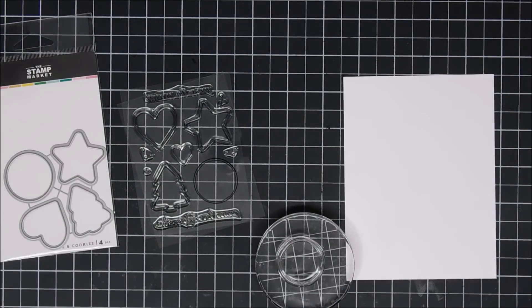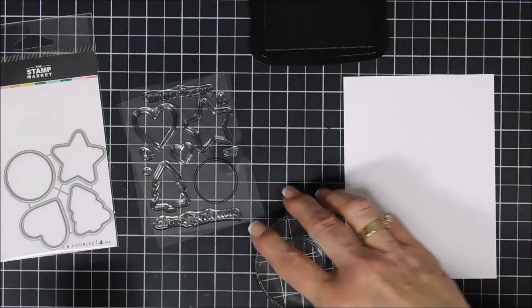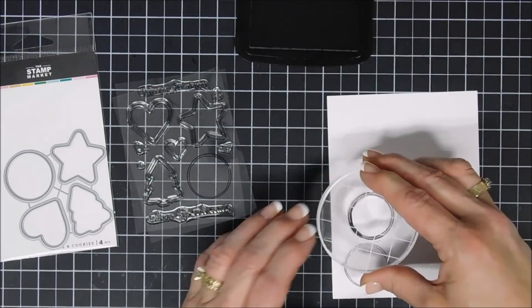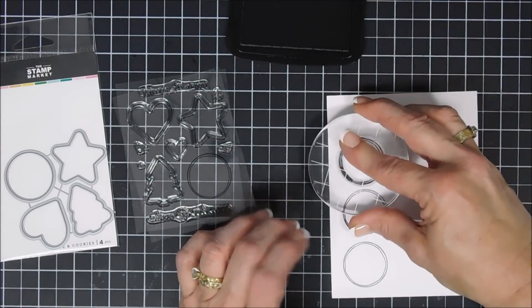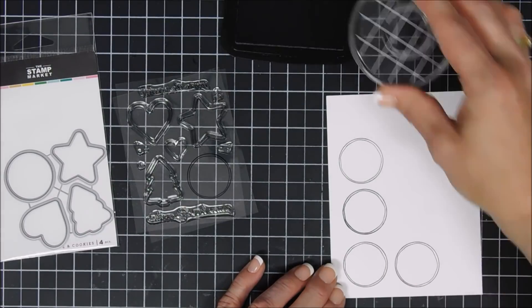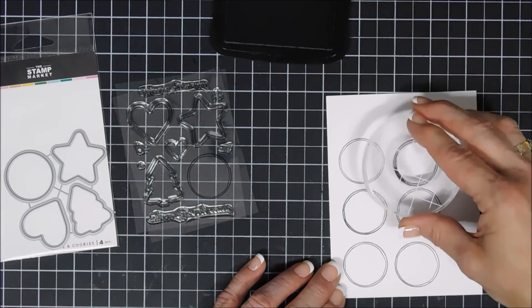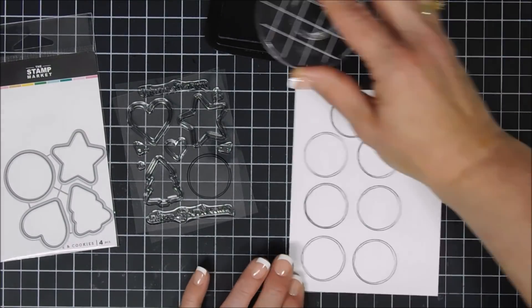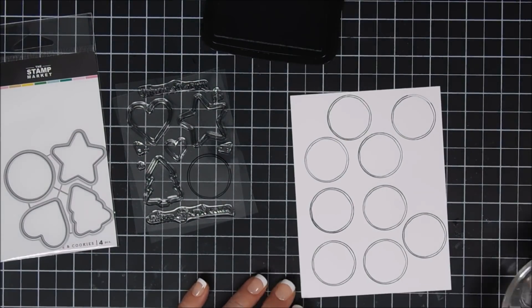We're going to stamp this on some Neenah 80-pound cardstock with Memento Tuxedo Black ink quite a few times. I stamped more than I needed, but later on I colored those in and added them on the inside of my card. We only end up using six for the outside of the card.